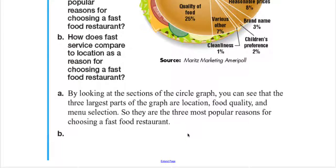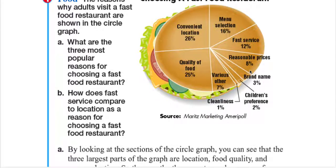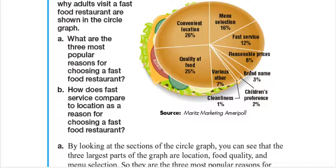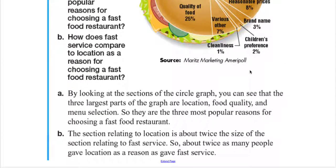For part B: how does fast service compare to location as a reason for choosing a fast-food restaurant? The section relating to location is about twice the size of the section relating to fast service, so about twice as many people gave location as a reason compared to those who gave fast service. By just looking at the circle graph, you can interpret and analyze what it means.